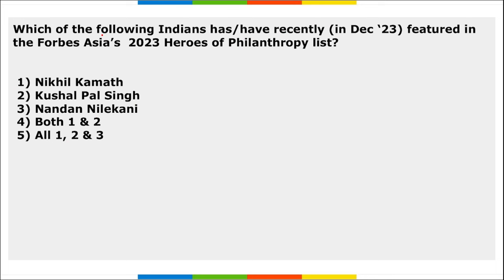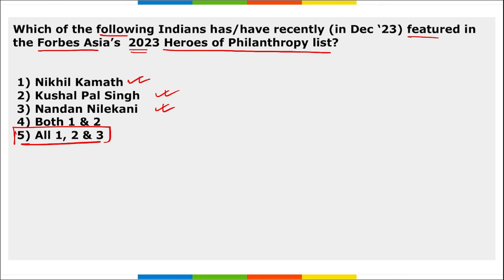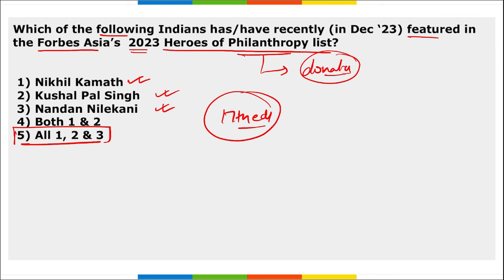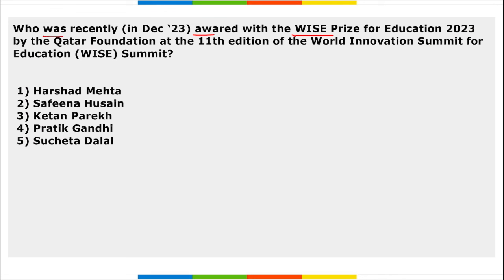Which of the following Indians have recently featured in the Forbes Asia 2023 Heroes of Philanthropy list? Nikhil Kamath, Khushal Pal Singh, and Nandan Nilekani — these three individuals were recently featured in the 17th edition of the annual Forbes Asia 2023 Heroes of Philanthropy list. A philanthropist is a person who basically donates.